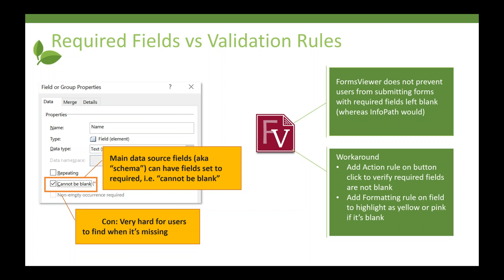To work around that InfoPath limitation, we implemented three rules — clear errors, get errors, and get error count — in QRules. Those rules have been in the QRules plugin for at least 10 years, since the early days, because we wanted to give users the ability to save data even if the form wasn't fully filled out. They hit the save button, it submits to the library in a saved state without kicking off a workflow. Now we've finally implemented those features properly. In Forms Viewer, we never prevented you from submitting a form if a field was blank, and we still don't.